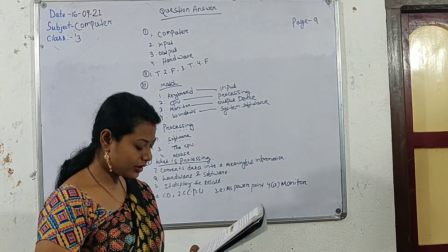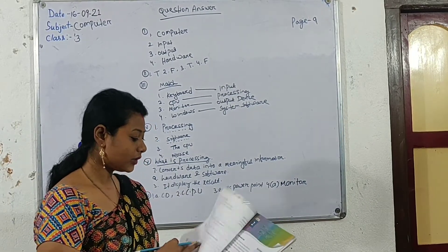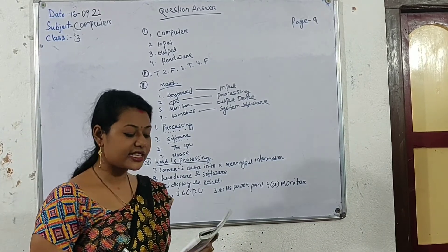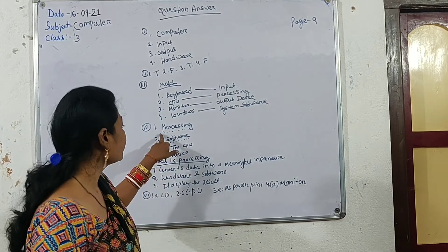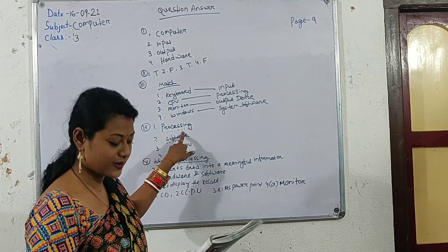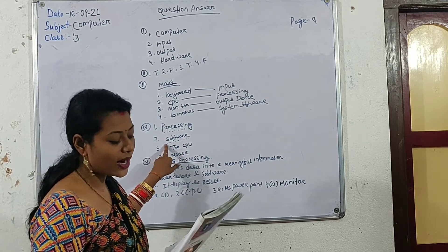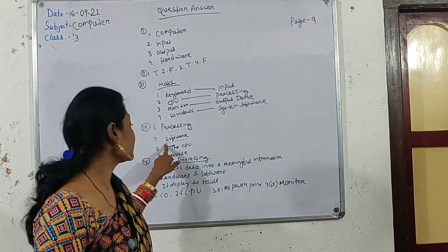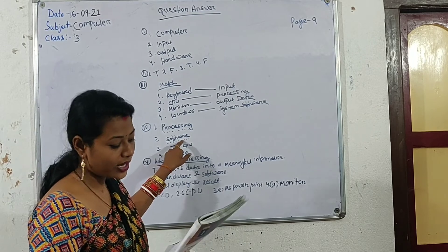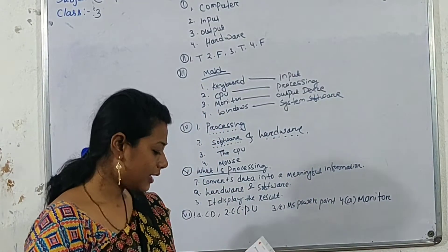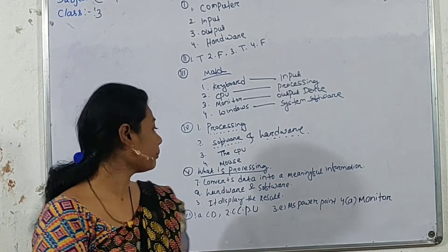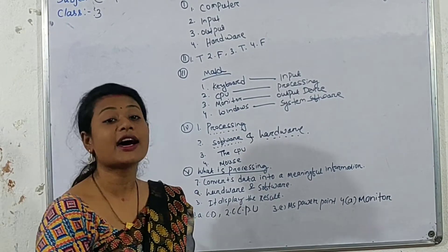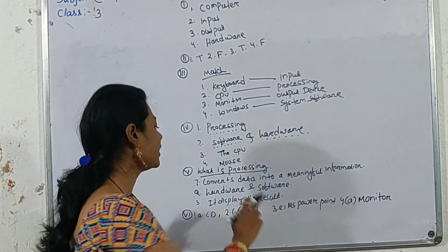Now come to fourth number: Fill in the blanks or write one word. First number: Converts data into meaningful information — this is called processing. Second number: What are the two basic parts of a computer? The two basic parts are software and hardware. Third: The brain of a computer is called the CPU. Fourth: One example of an input device is the mouse.